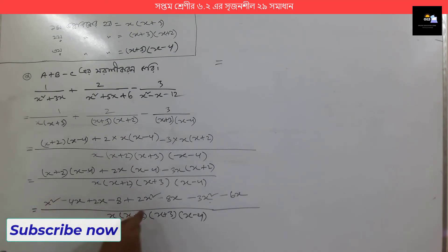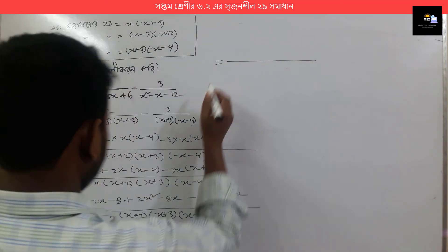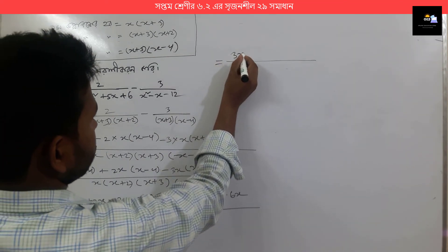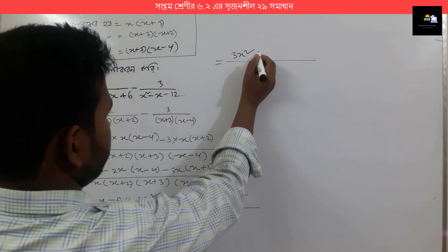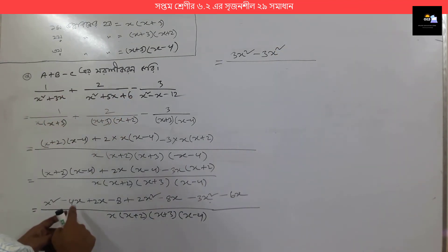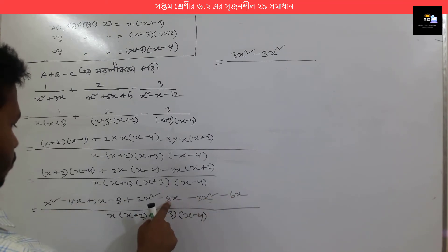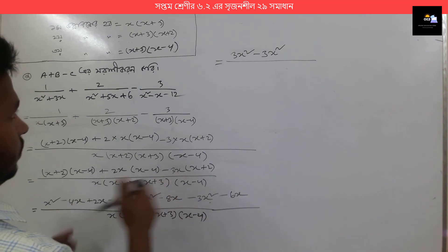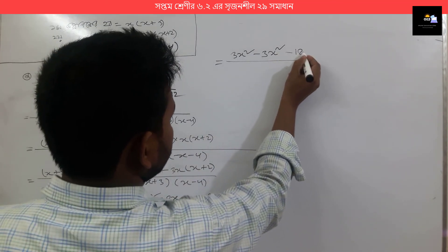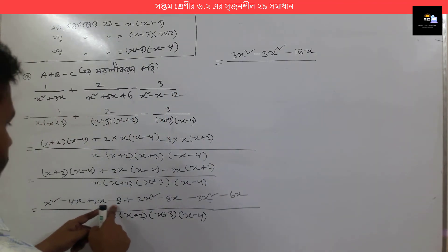X squared is 1. Now we have 3x squared. 3x squared minus 3x squared. 4x squared is 4 — giving 0. So minus 18x squared is plus 2x squared.